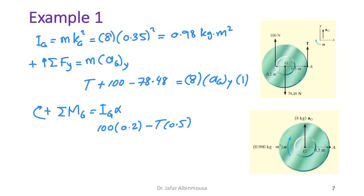Note that the moment arm distances are different: 0.5 m for tension and 0.2 m for the applied force. This equals I_G·α = 0.98·α.